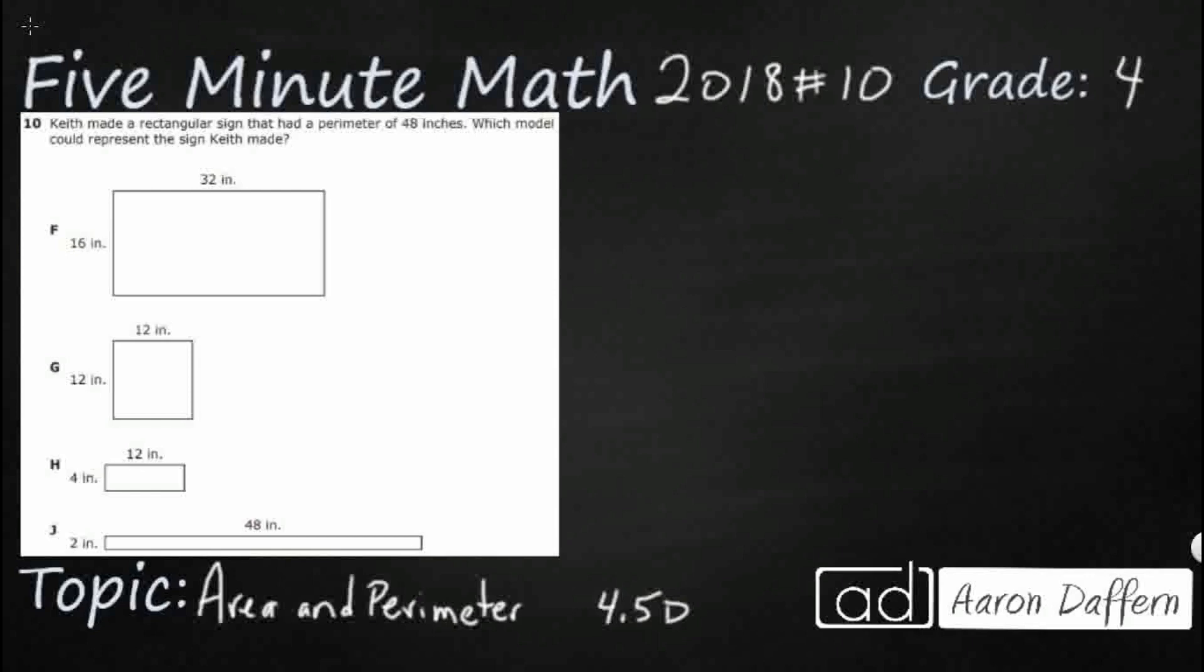So we have Keith and he's making a rectangular sign. The only clue we have is that it is a perimeter of 48 inches and then we just need to figure out which one of these could have that perimeter of 48 inches.